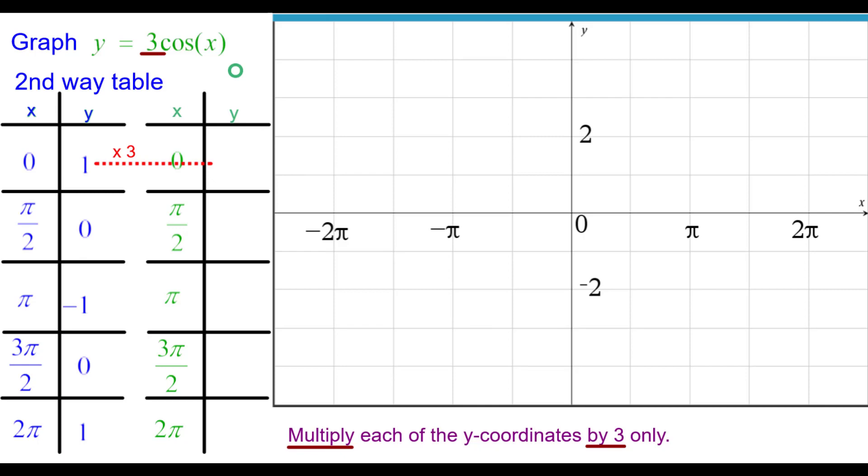And so I'm going to multiply 1 by 3 and get 3. So my first point will be at 0,3. 0 times 3 is 0. So write pi over 2, 0. Negative 1 times 3 is negative 3. Write pi, negative 3. 0 times 3 is 0. 3 pi over 2, 0. And 1 times 3 is 3. 2 pi, 3.